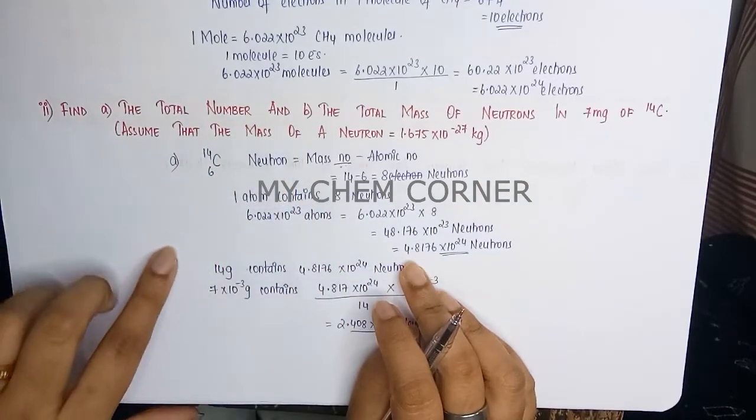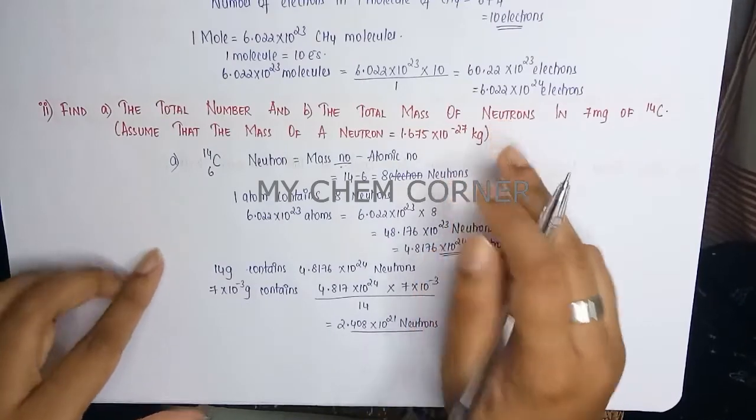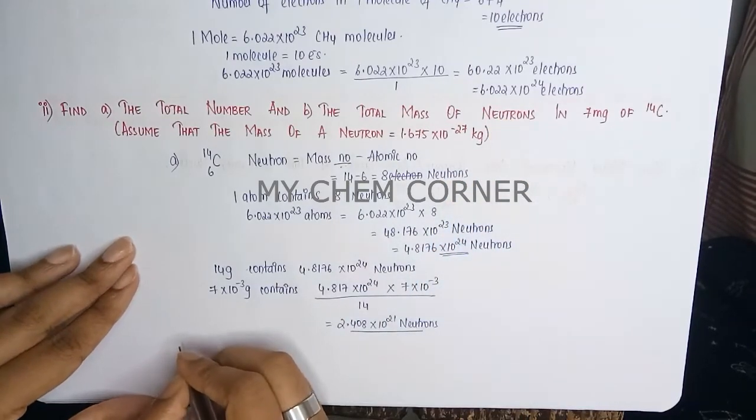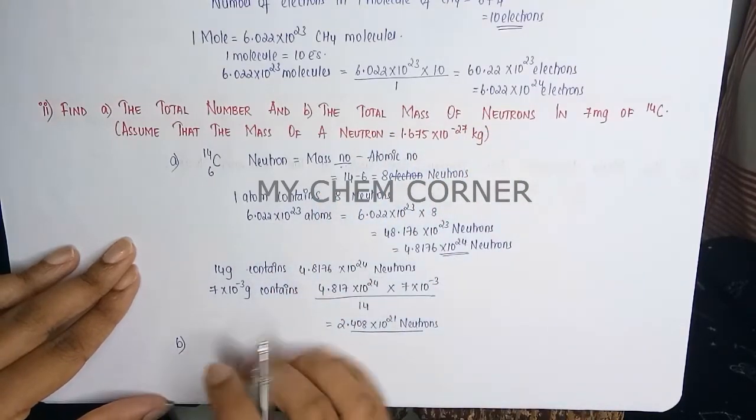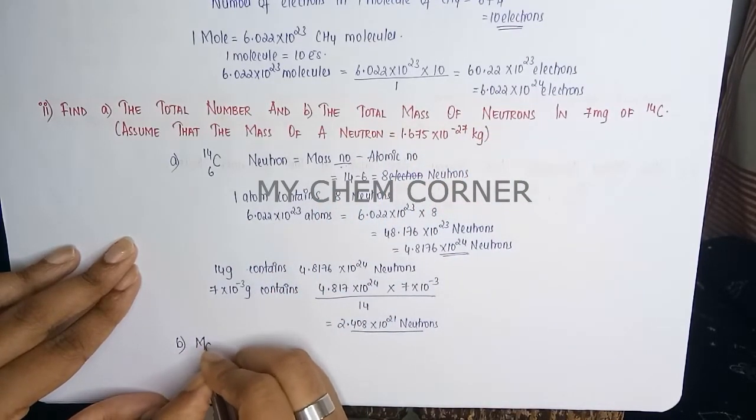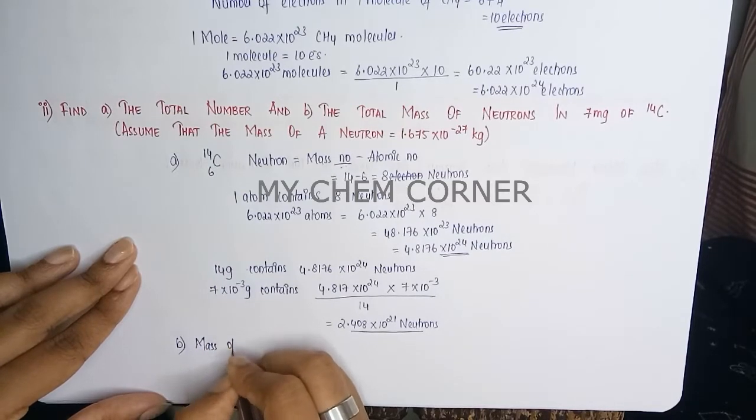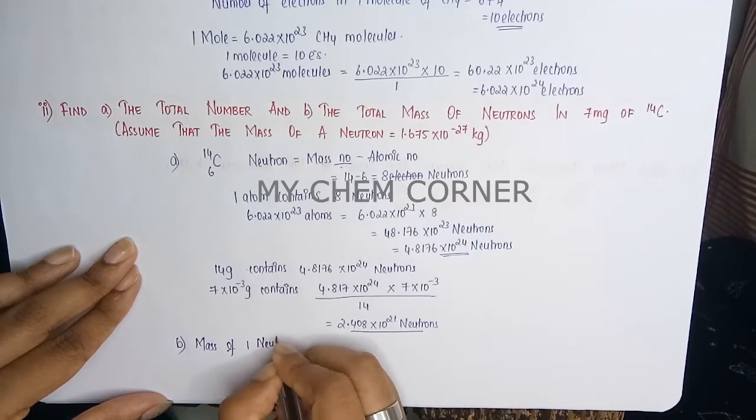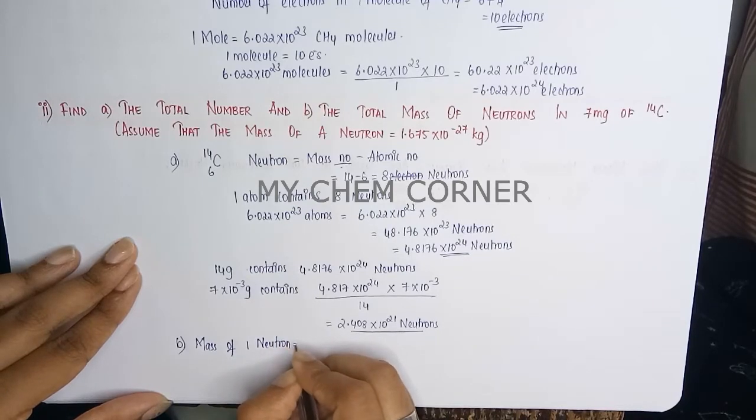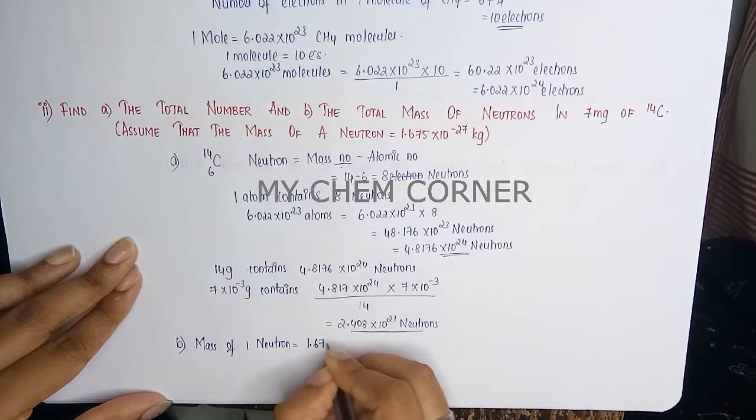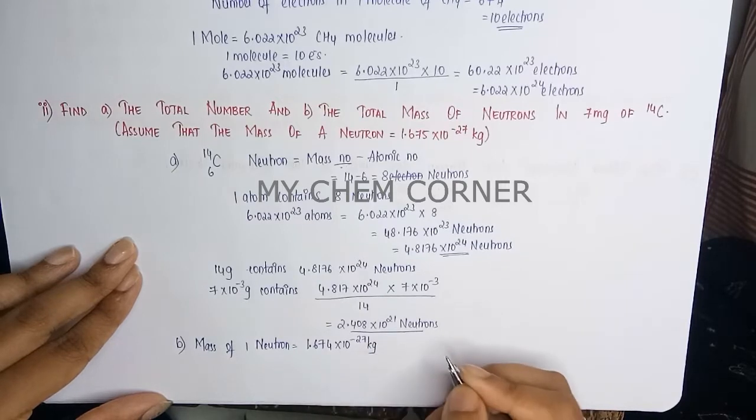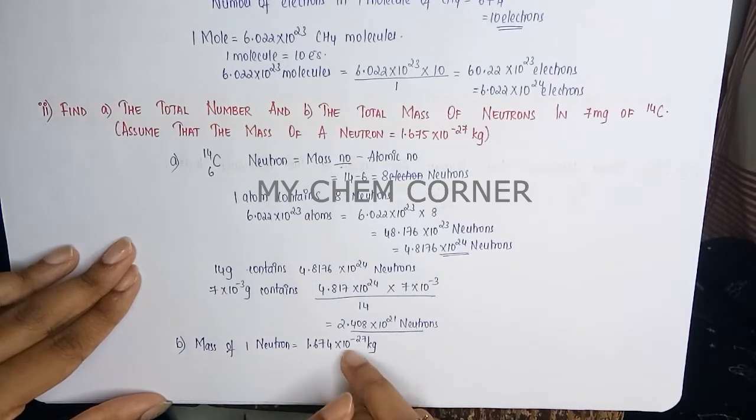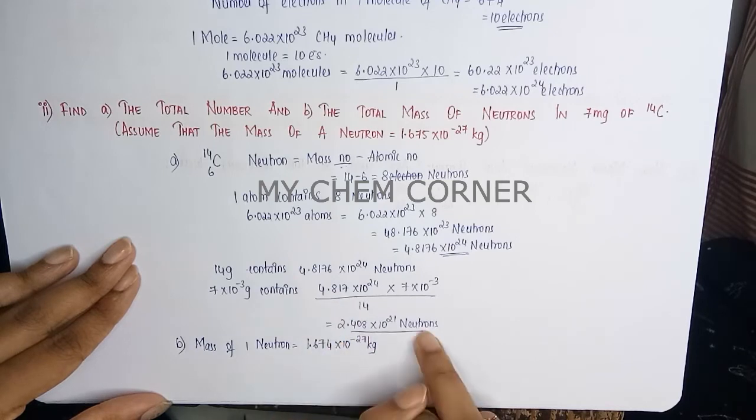Now part B says total mass of neutrons. So here we are going to answer the second part that says total mass of neutrons. Here we know that the mass of 1 neutron equals 1.674 times 10 to the power minus 27 kilograms. That is the mass of 1 neutron, therefore for these many neutrons what is the mass?